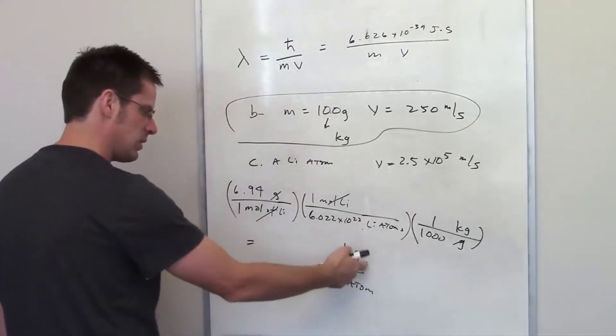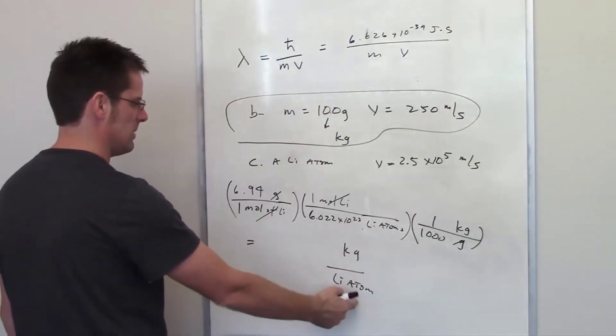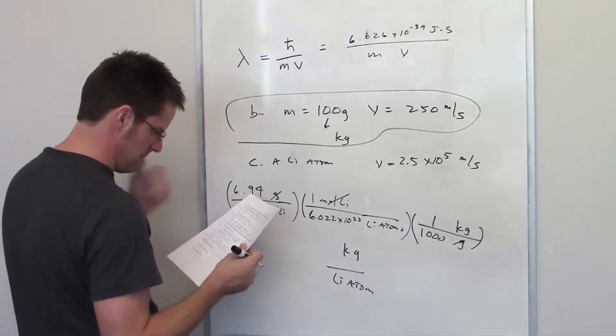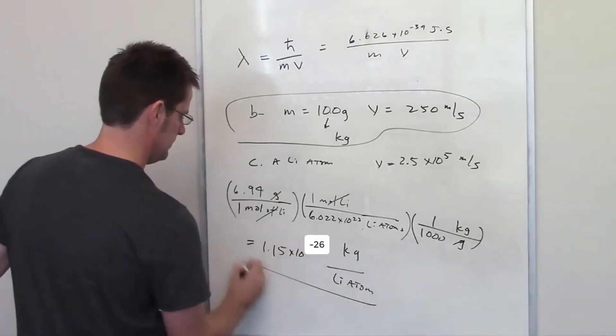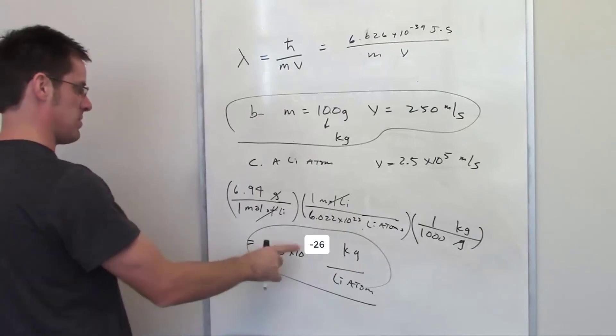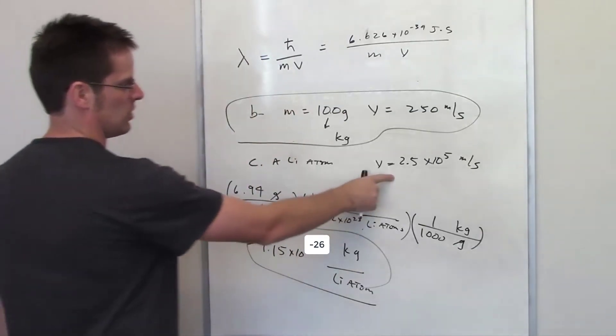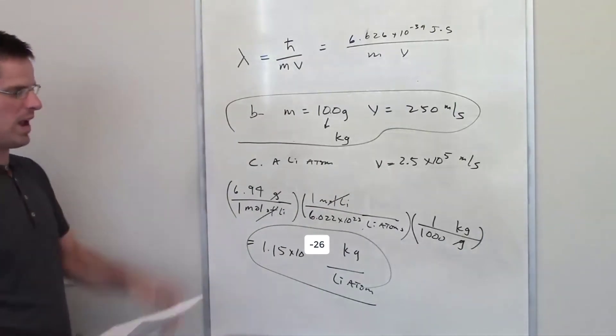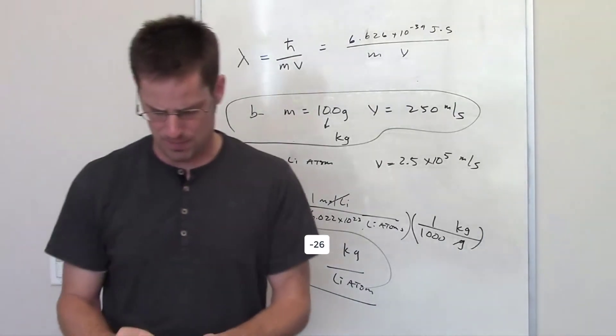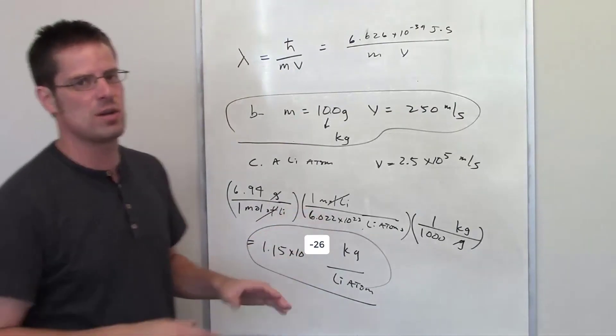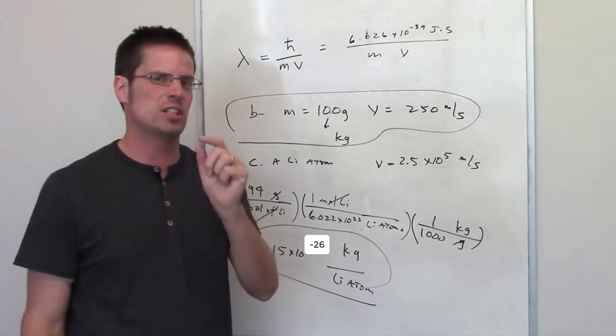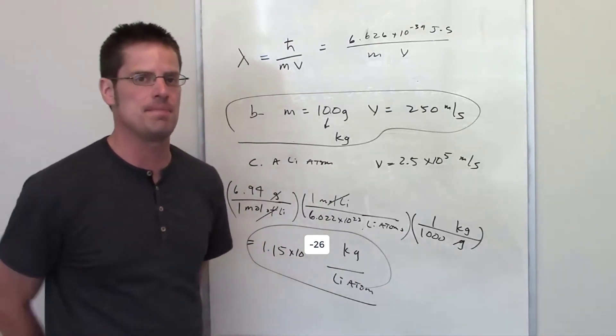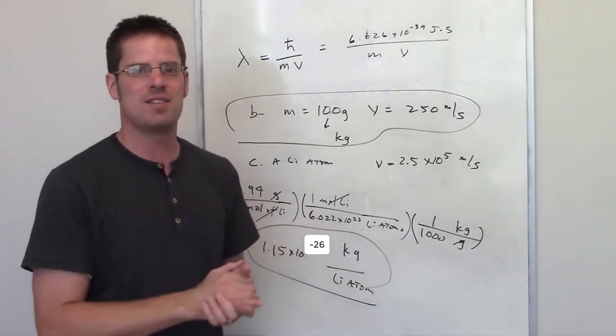I'm left with kilograms in the numerator and lithium atoms in the denominator. Throwing that all in, I ended up determining that the mass of an individual lithium atom is 1.15 times 10 to the negative 26th kilograms. You can then throw that into this same equation with the proper units and determine the wavelength of an individual lithium atom. You'll see that the answer is going to be a much larger number than Parts A or B because you're talking about such a small particle. I'll let you go ahead and do those on your own. Have a good day.